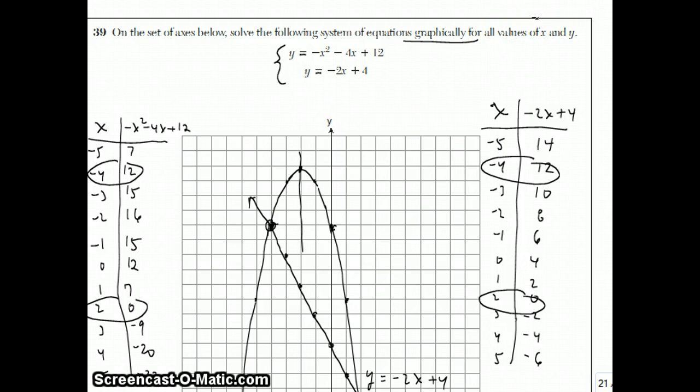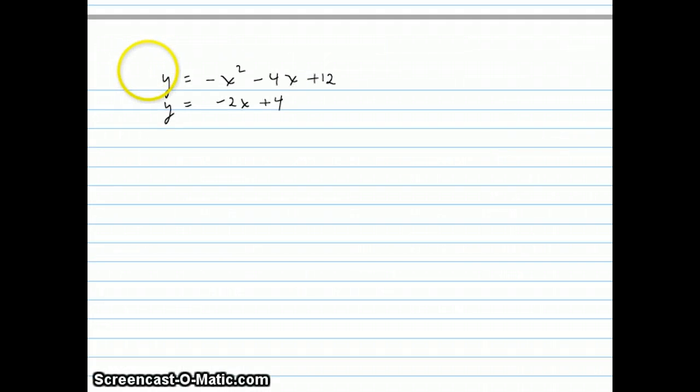Just as a side note, the easiest way to do this question is actually not to use the graphical approach. It's to solve it with algebra. So I'm going to show you how you would solve this question using algebra also. Now they could have just as well asked this question to solve algebraically. The way you solve algebraically is you substitute this y for this entire expression. So we get negative x squared minus 4x plus 12 equals negative 2x plus 4. Now I'm going to move everything over to the right-hand side. So if I add x squared to both sides and 4x and subtract 12.